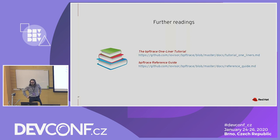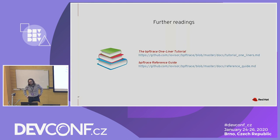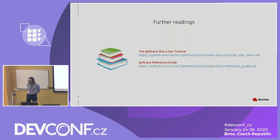You had that example where you were filtering for the command name — it said comm equals GCC. I just tried that and for some reason I can't use the comm variable in the filter anymore. Is that on purpose? — I don't know. It's one of the basic built-in variables. What version do you have? — 5.4. — BPF trace 5.4? Yeah, it's pretty old, I guess. — It's relatively recent, so sometimes stuff doesn't work, or it breaks.